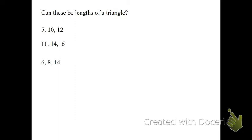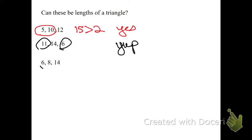Can these be lengths of a triangle? Add up the two small numbers. Is that more than 12? Yup. 15 is more than 12. Therefore, yes, this could be a triangle. Be warned on the second one. Make sure you use the two smallest numbers. Six plus 11. Is that more than 14? Yup. And six plus eight. Is that more than 14? Nope. So it's very easy. That's the first part.